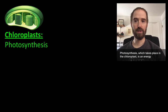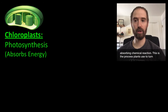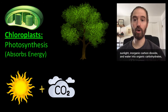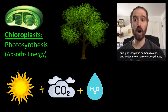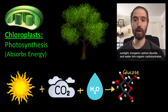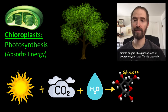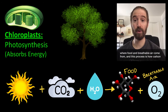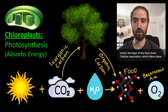Photosynthesis, which takes place in the chloroplast, is an energy absorbing chemical reaction. This is the process plants use to turn sunlight, inorganic carbon dioxide, and water into organic carbohydrates — simple sugars like glucose — and of course oxygen gas. This is basically where food and breathable air come from, and this process is how carbon enters the base of the food chain.